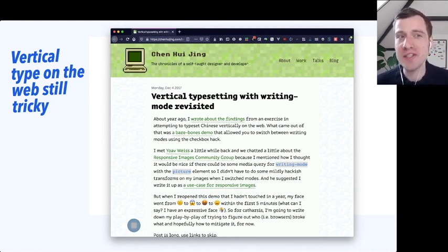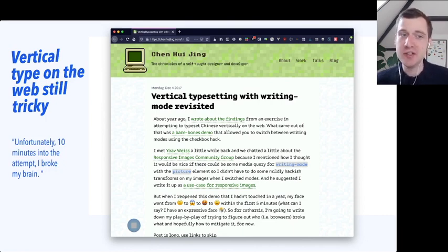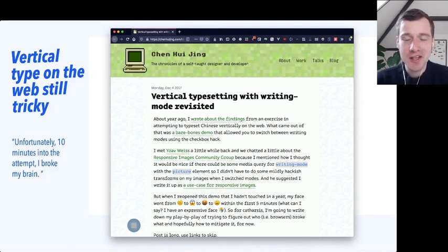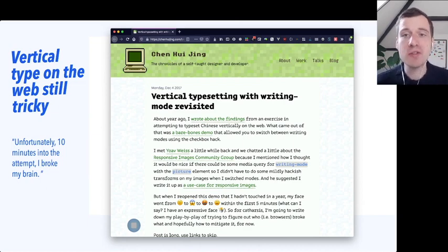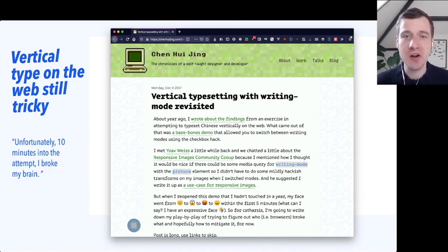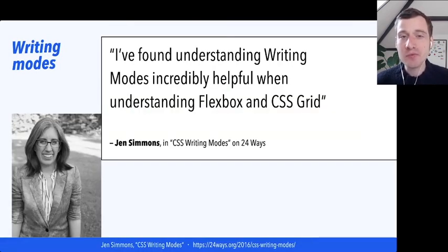It would be really cool if the web automatically adapted for all these writing systems, and there is CSS invented for that. A great primer is Wei Jing's post, 'Vertical Typesetting with Writing Mode Revisited,' where she goes from frowny face to scared face to angry face to disappointed face in just five minutes. One conclusion I drew is that vertical type on the web is still quite tricky to get right. She quotes: 'Unfortunately, 10 minutes into the attempt, I broke my brain.' So not all writing modes will work as easily as you might expect, especially if you're trying to use pictures and things that are not text.